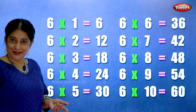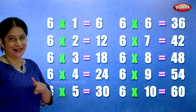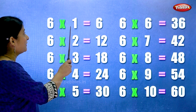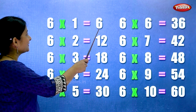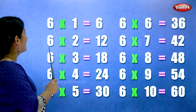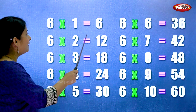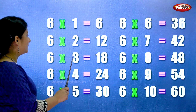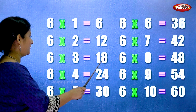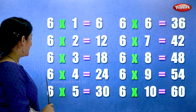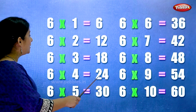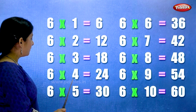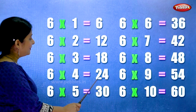Let's learn the table of six one more time. Six ones are six. Six twos are twelve. Six threes are eighteen. Six fours are twenty-four. Six fives are thirty.